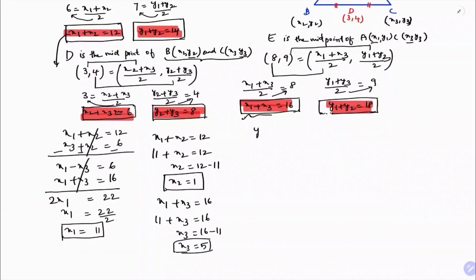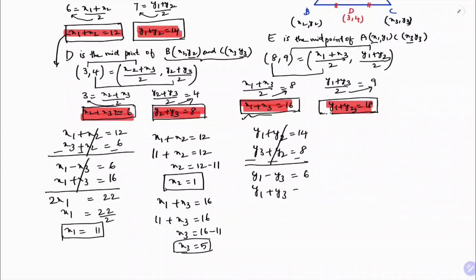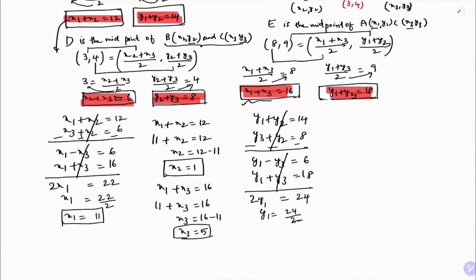In the same way, taking y1 plus y2 equals 14 and y2 plus y3 equals 8, subtracting gives y1 minus y3 equals 6. Then using y1 plus y3 equals 18 and adding, 2y1 equals 24, so y1 equals 12.